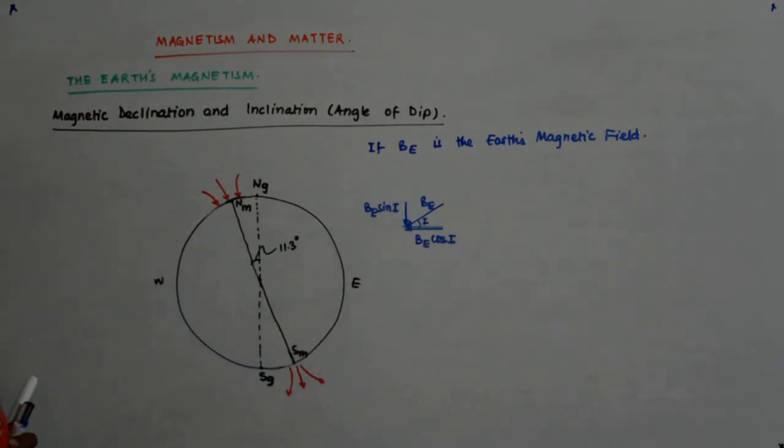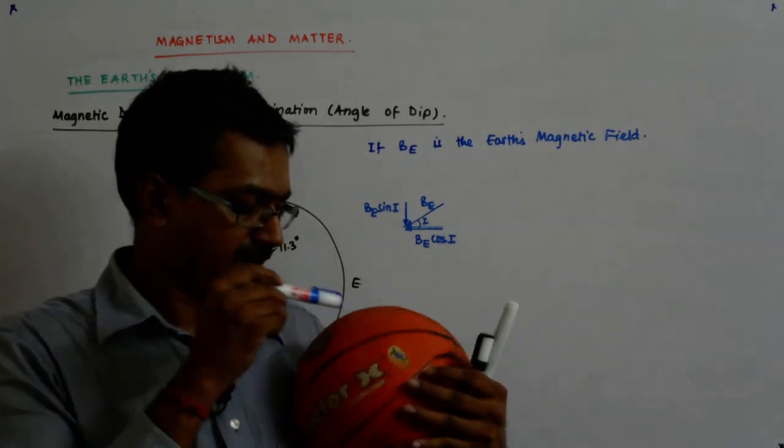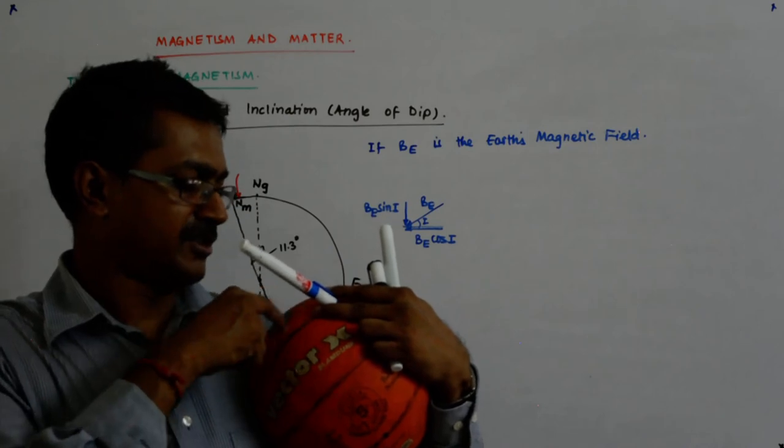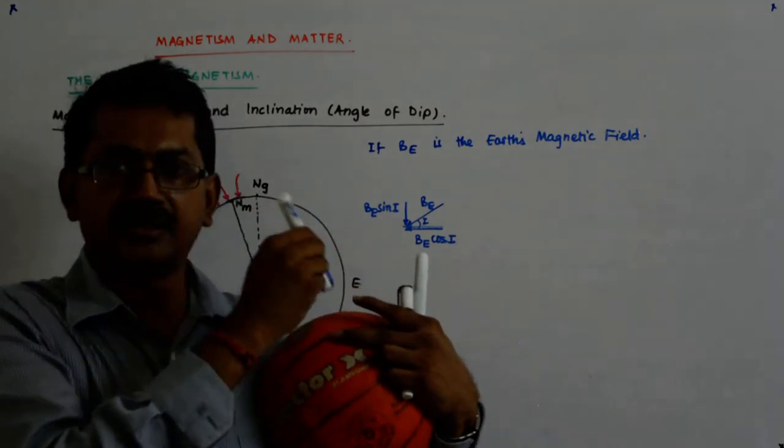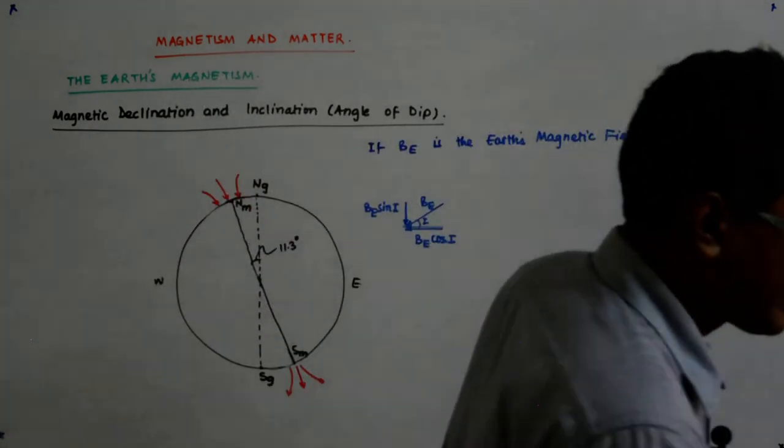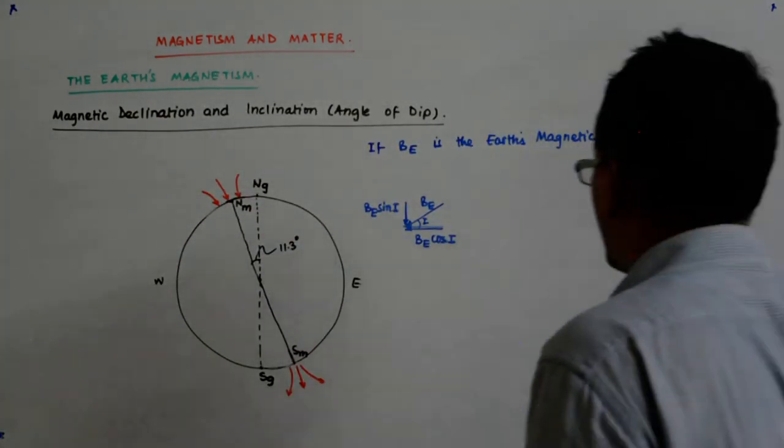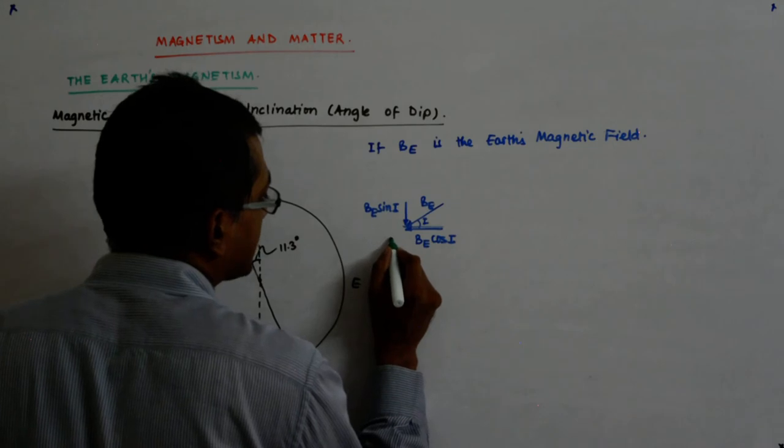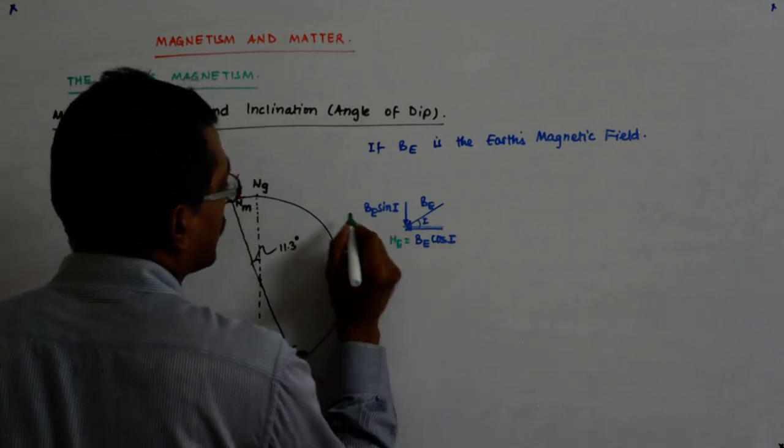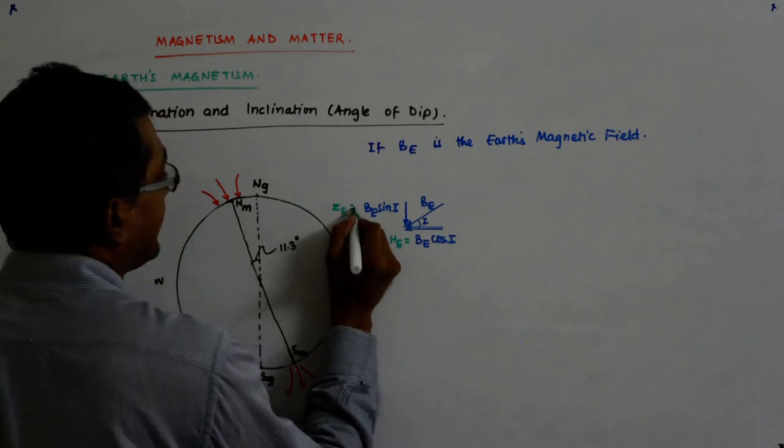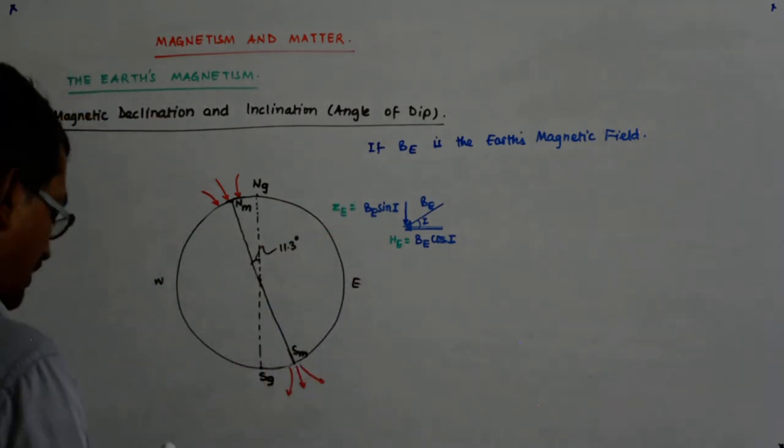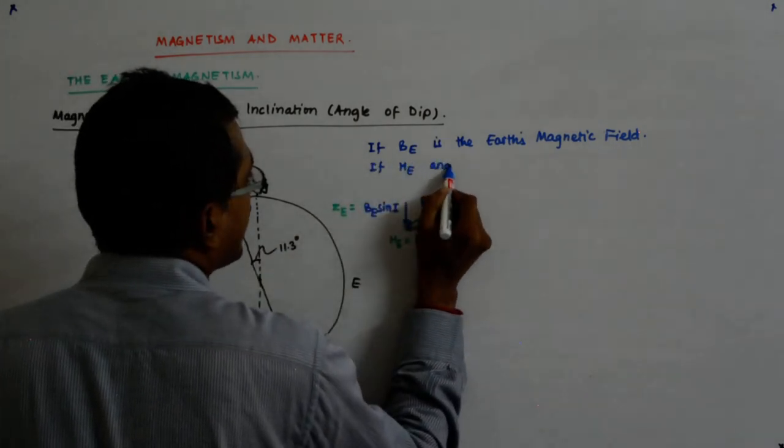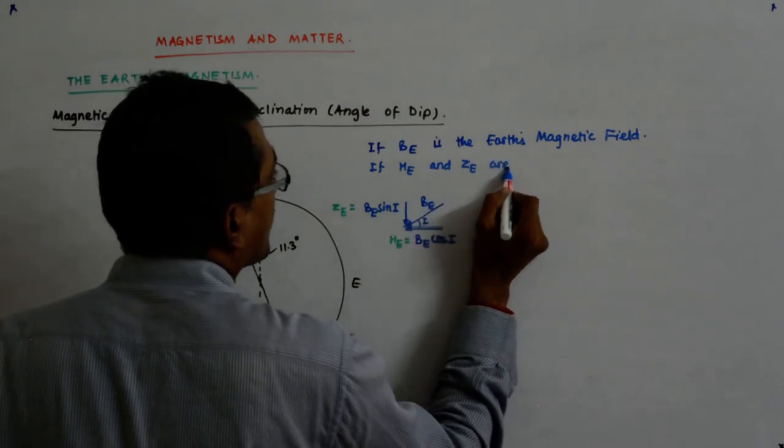And what is this? This is B_E sin I. Do we understand that? The vertical, this is a vector, this angle is I. I resolve it. This component is B_E cos I and the vertical component is B_E sin I. So I call the horizontal component as H_E and the vertical as Z_E.